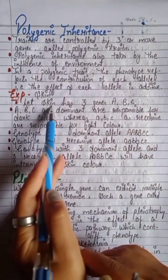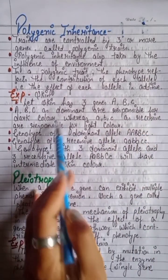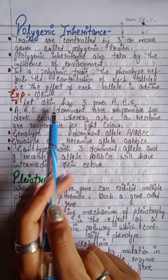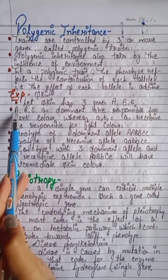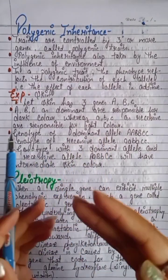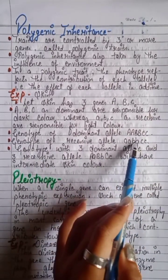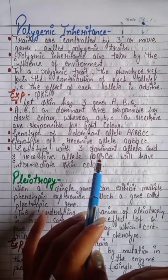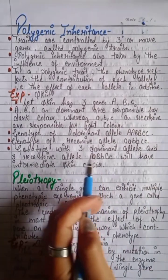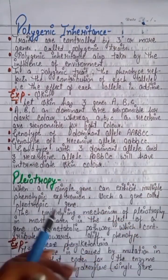Example of polygenic inheritance is skin color. Skin has three genes: capital A, capital B, and capital C. Capital A, B, C are dominant and responsible for dark color, whereas small a, small b, small c are recessive and responsible for light color. The genotype with three dominant alleles is AABBCC and recessive is aabbcc. A genotype with three dominant and three recessive alleles — like AaBbCc — will have an intermediate skin color.